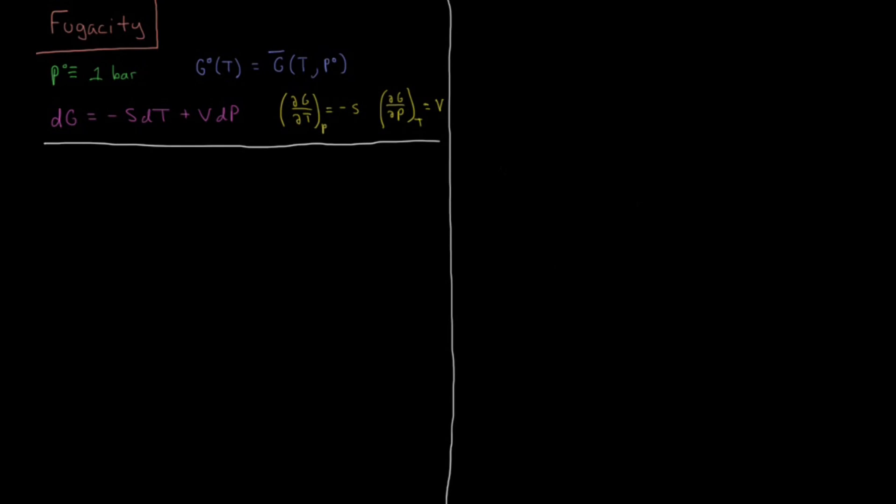In this video we're going to look at fugacity, which is a measure for how a gas behaves non-ideally, and try to look at how we can find the pressure dependence of the Gibbs energy for a non-ideal gas.